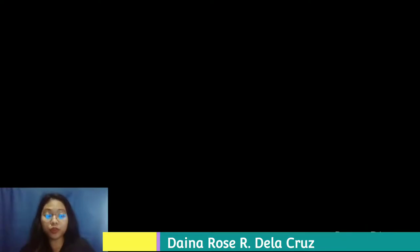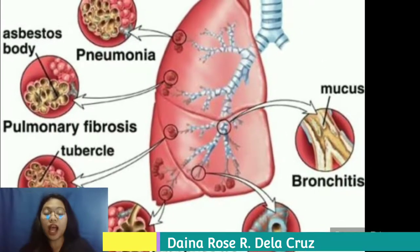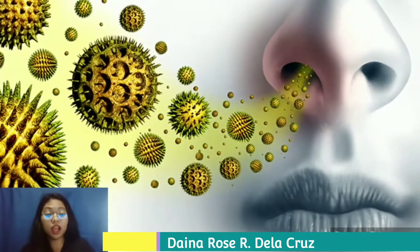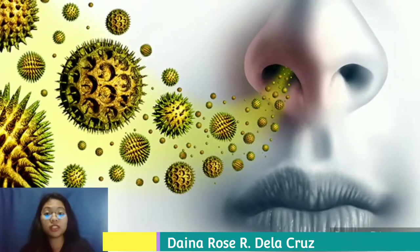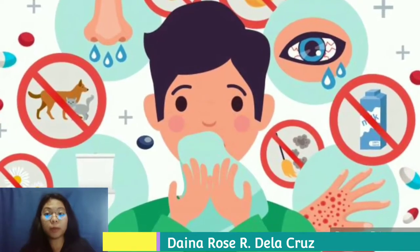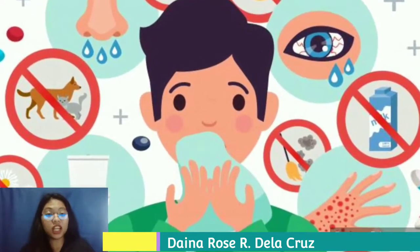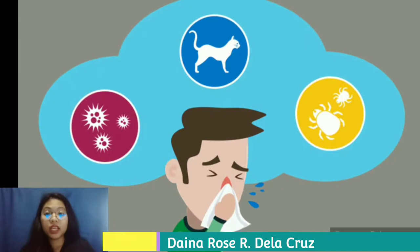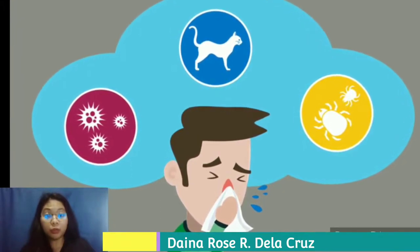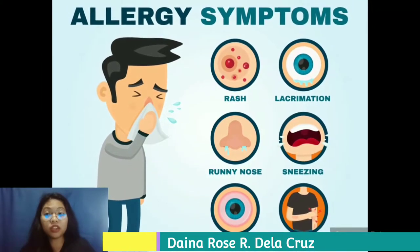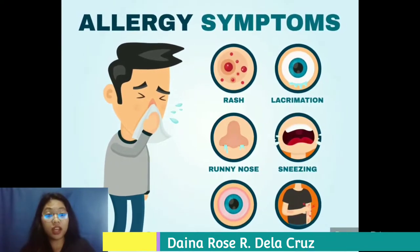I'm Dinah Rose Ardelacruz from BSD1D and I'm going to discuss respiratory system diseases. Allergy is an immune system response to a foreign substance not typically harmful to your body; these substances are called allergens and can include certain foods, pollen, or pet dander. Inhaling proteins such as dust, mold, and pollen can cause respiratory allergies, leading to inflammation in our airways. Symptoms include itchy and watery eyes, sneezing, nasal congestion, itching, and runny nose.